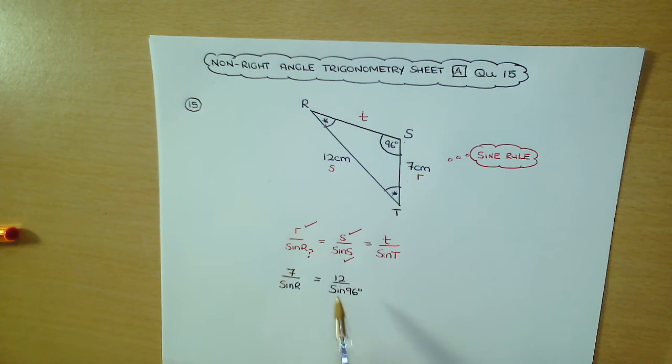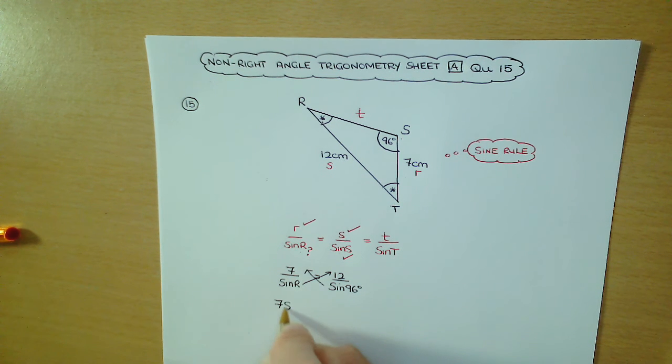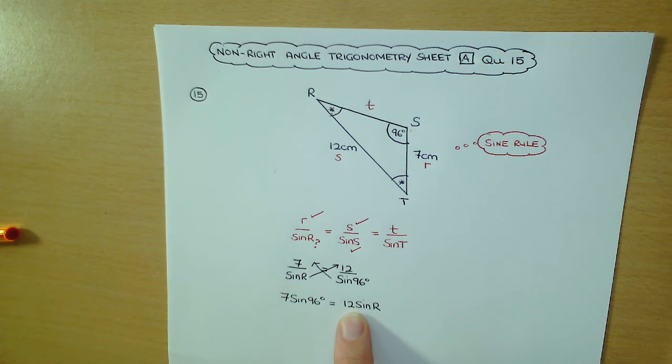With one fraction on each side, we're going to cross multiply. So we're going to get 7 sine 96, and that's equal to 12 sine R. Divide both sides by the coefficient of sine R, which is 12.